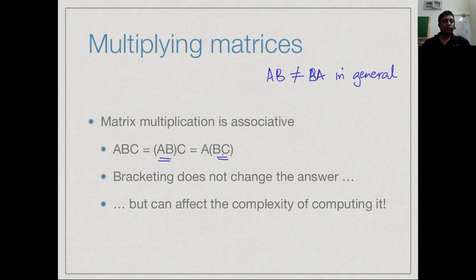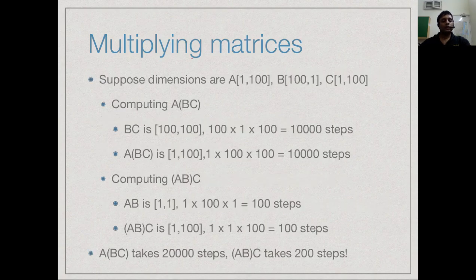What is interesting is that the complexity of computing the answer can change depending on the order of operations — whether we do (AB)C or A(BC). Let's look at a trivial example.